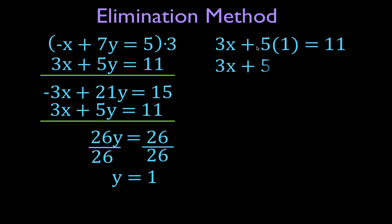Now I'm going to simplify. 3x + 5 because 5 times 1 is 5 equals 11. Now I have positive 5. I need to move that to the other side. I'm going to add -5 to both sides, draw a line, 3x. This goes to 0, and 11 + (-5) is 6.